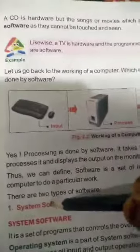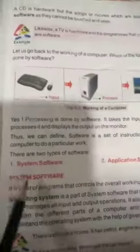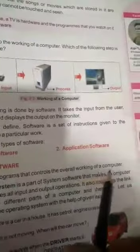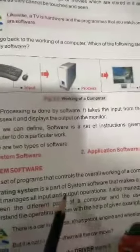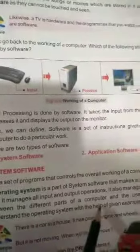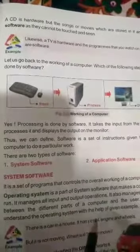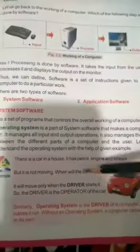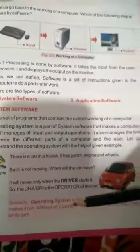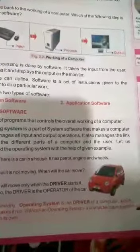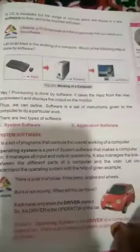There are two types of software: system software and application software. System software is a set of programs that controls the overall working of a computer. The operating system is a part of system software that makes a computer run — it manages all input and output operations and the link between different parts of the computer and the users. For example, like a car needs a driver to move, similarly the operating system is the driver of a computer. Without an operating system, a computer cannot work on its own.